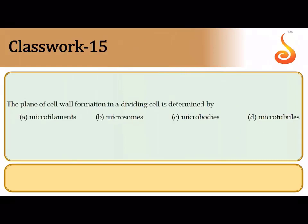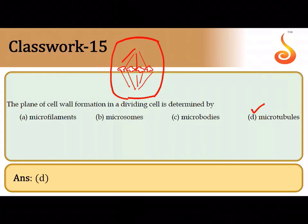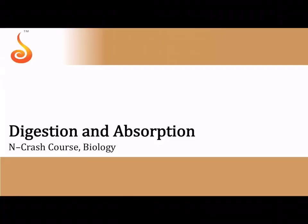The plane of cell wall formation is entirely decided by microtubules. After a plant cell divides, spindle fibers — which are microtubules — trap Golgi vesicles at the middle of the cell. These vesicles merge to form the cell plate, which is the first step in cell wall formation. Therefore, the answer is microtubules.